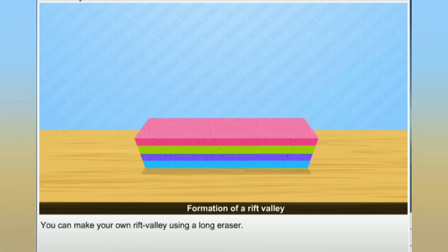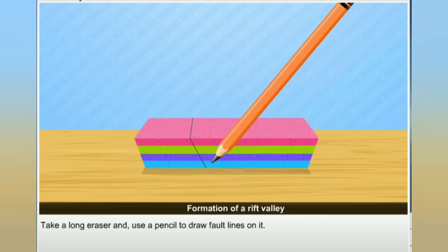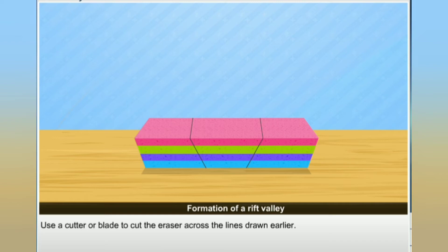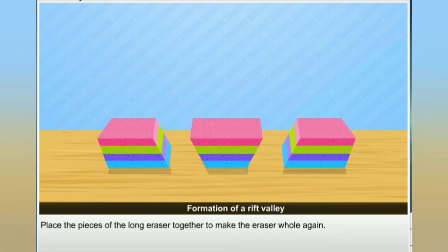You can make your own rift valley using a long eraser. Take a long eraser and use a pencil to draw fault lines on it. Use a cutter or blade to cut the eraser across the lines drawn earlier. Place the pieces of the long eraser together to make the eraser whole again.